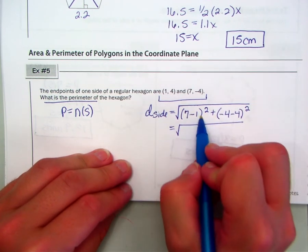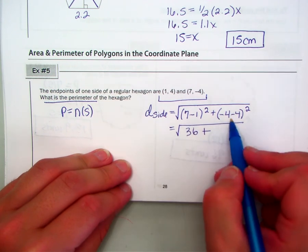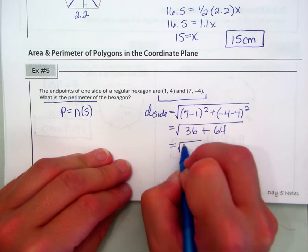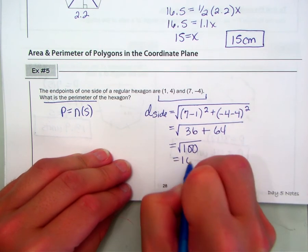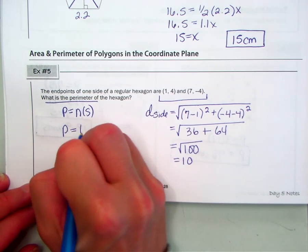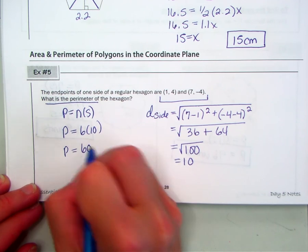So 7 minus 1 is 6. 6 squared, 36. Negative 4 minus 4 is negative 8 squared. It's 64. And that would be the square root of 100, which is 10. So now, if it's a hexagon, the perimeter is going to be 6 times 10, which is 60 units.